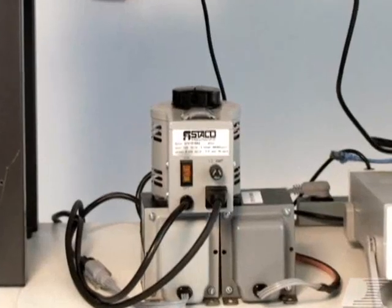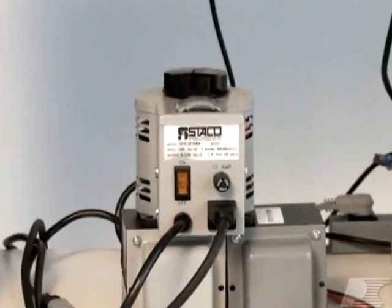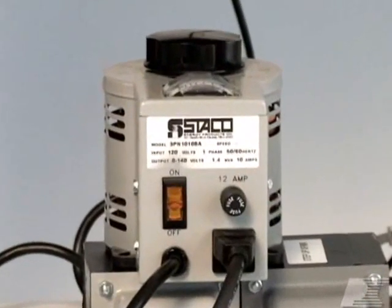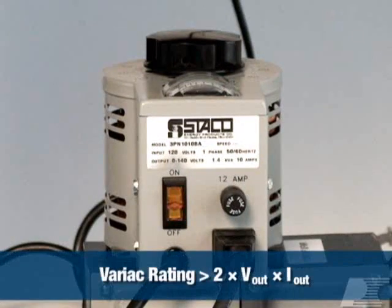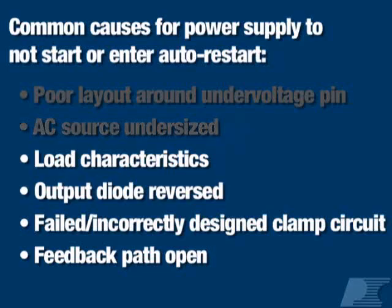Check that the AC source is rated to handle the expected input power of your supply. If it's not, the source will limit the power provided to the converter and prevent proper start-up and regulation. As a rule, your AC source volt-amp rating should be greater than twice the output power of your supply. An undersized AC source is typically an issue with high-power designs.